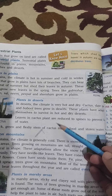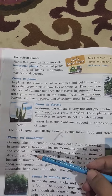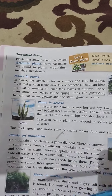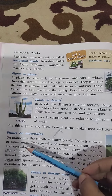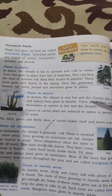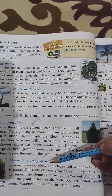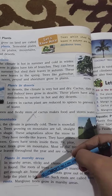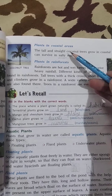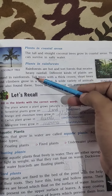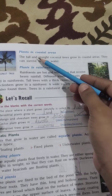In deserts, we have cactus, jade palm, and babool. In mountains, we have pine, cedar, and spruce. Marshy areas, meaning daldali areas, have mangrove trees.